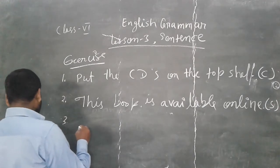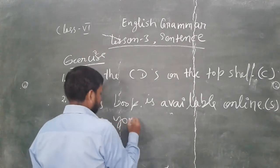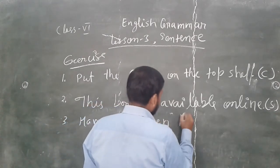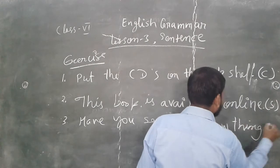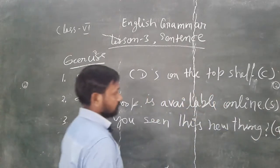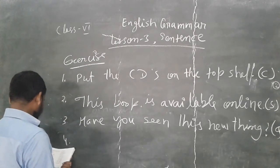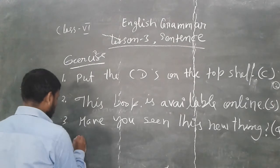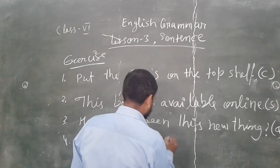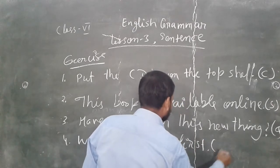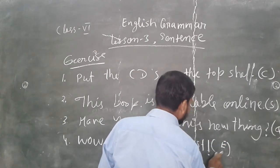Next: 'Have you downloaded the information?' or 'Have you seen this new thing?' That has a question mark, so you can write here: question. And next: 'Wow! You got first!' — this is an exclamation. We put an exclamation sign and write 'E' for exclamation.